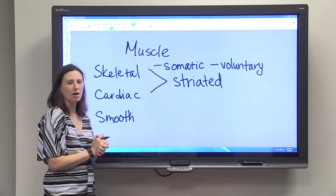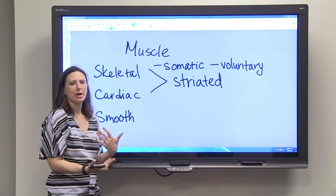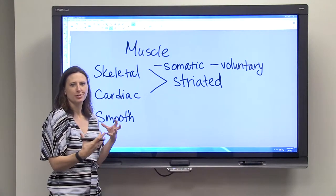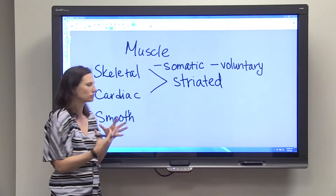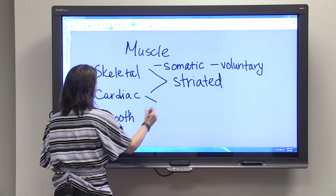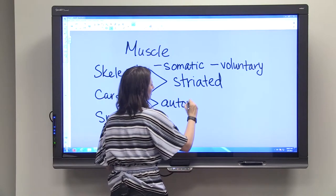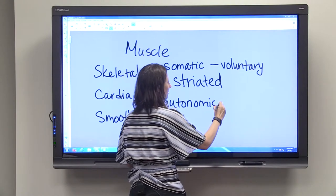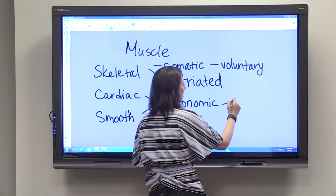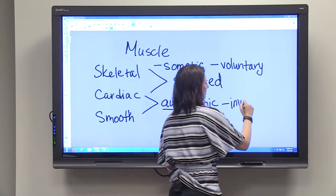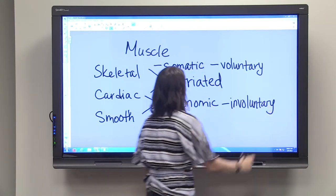Cardiac muscle is found in the walls of your heart and smooth muscle is found lining the walls of your blood vessels or in your stomach that helps your stomach muscles contract and shorten and digest your food. Both of these types of muscles are controlled by your autonomic nervous system.